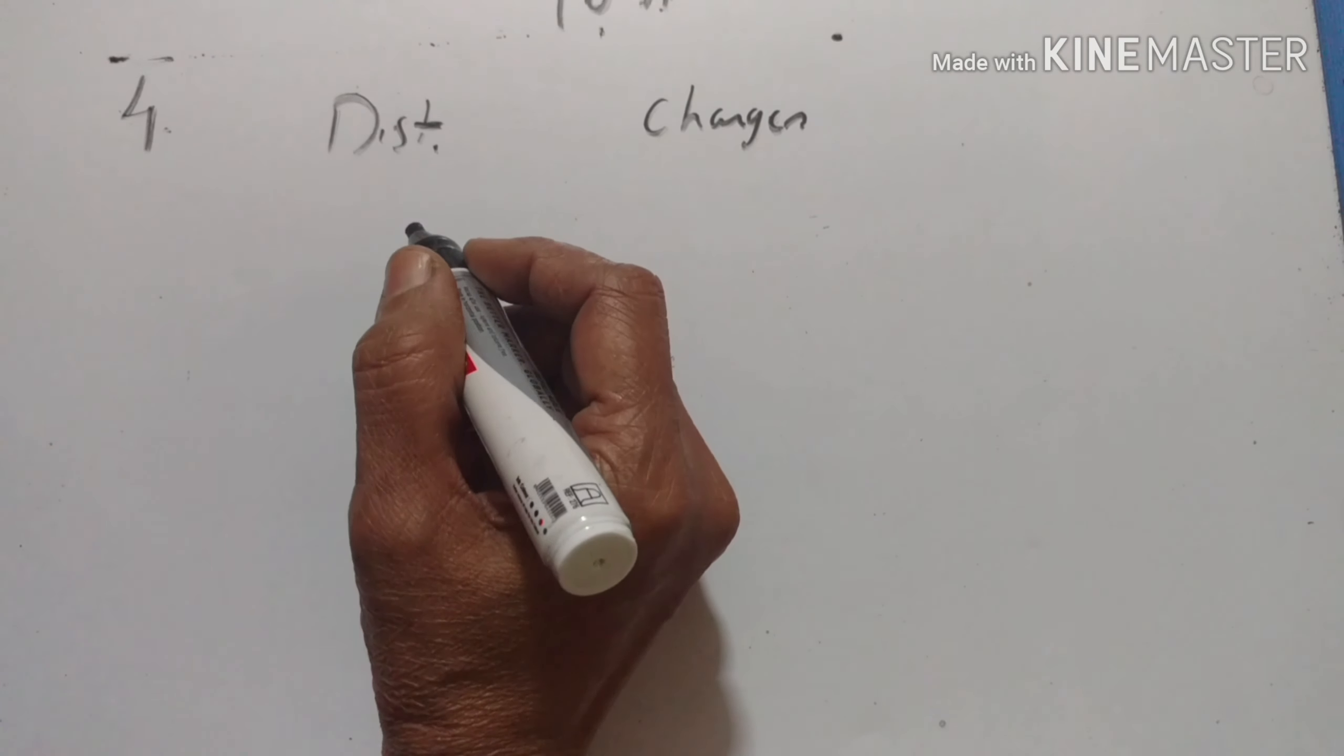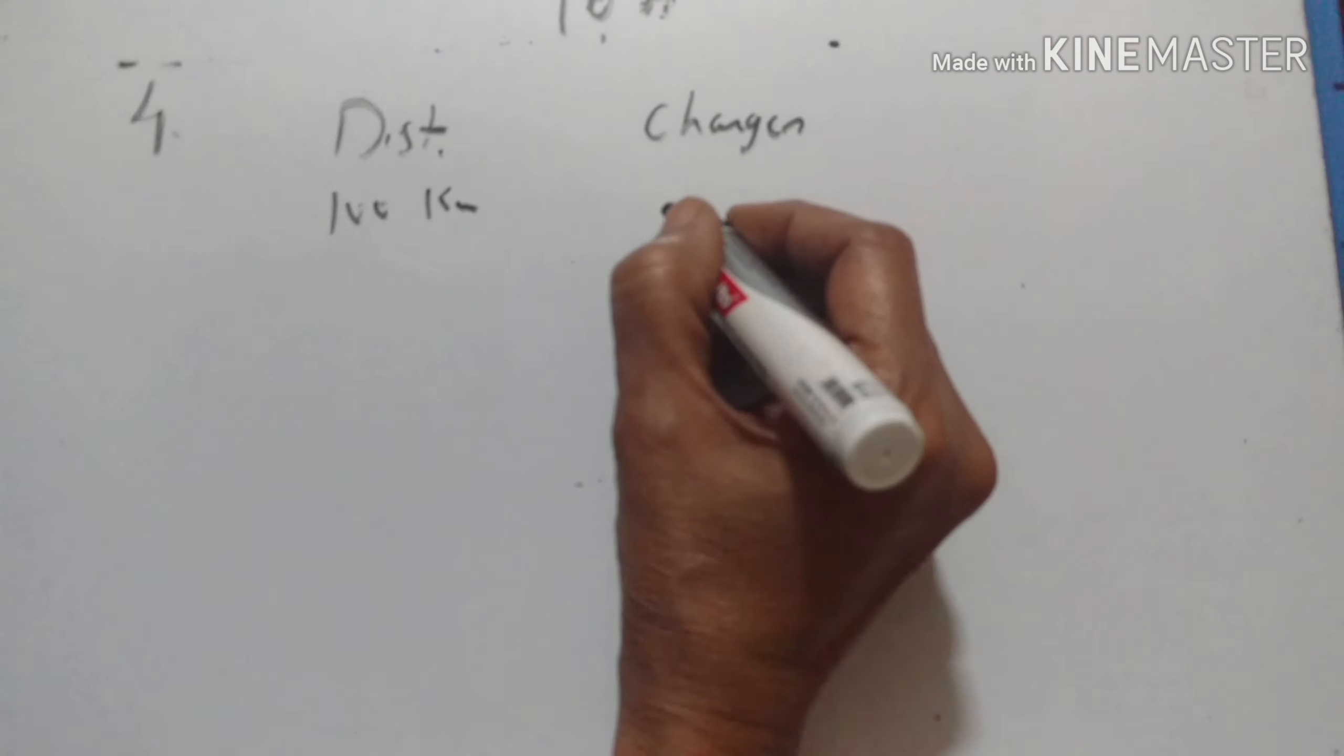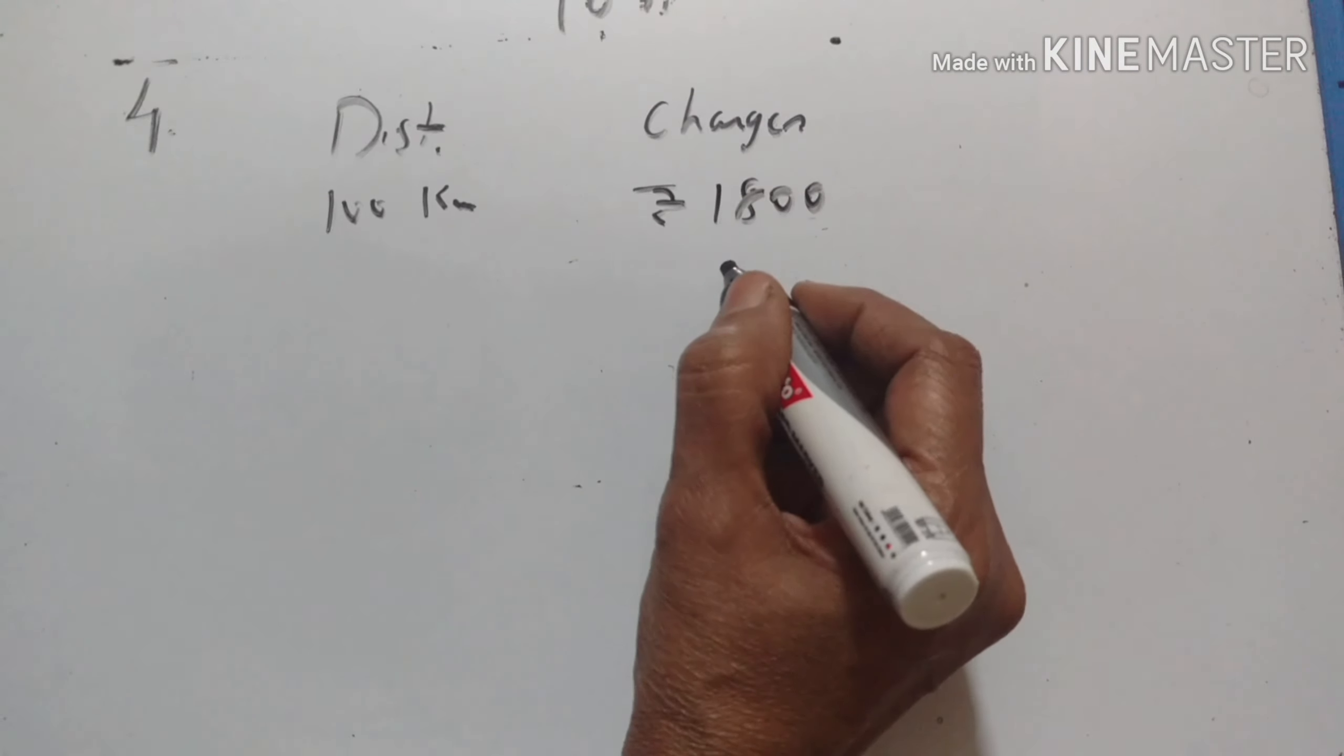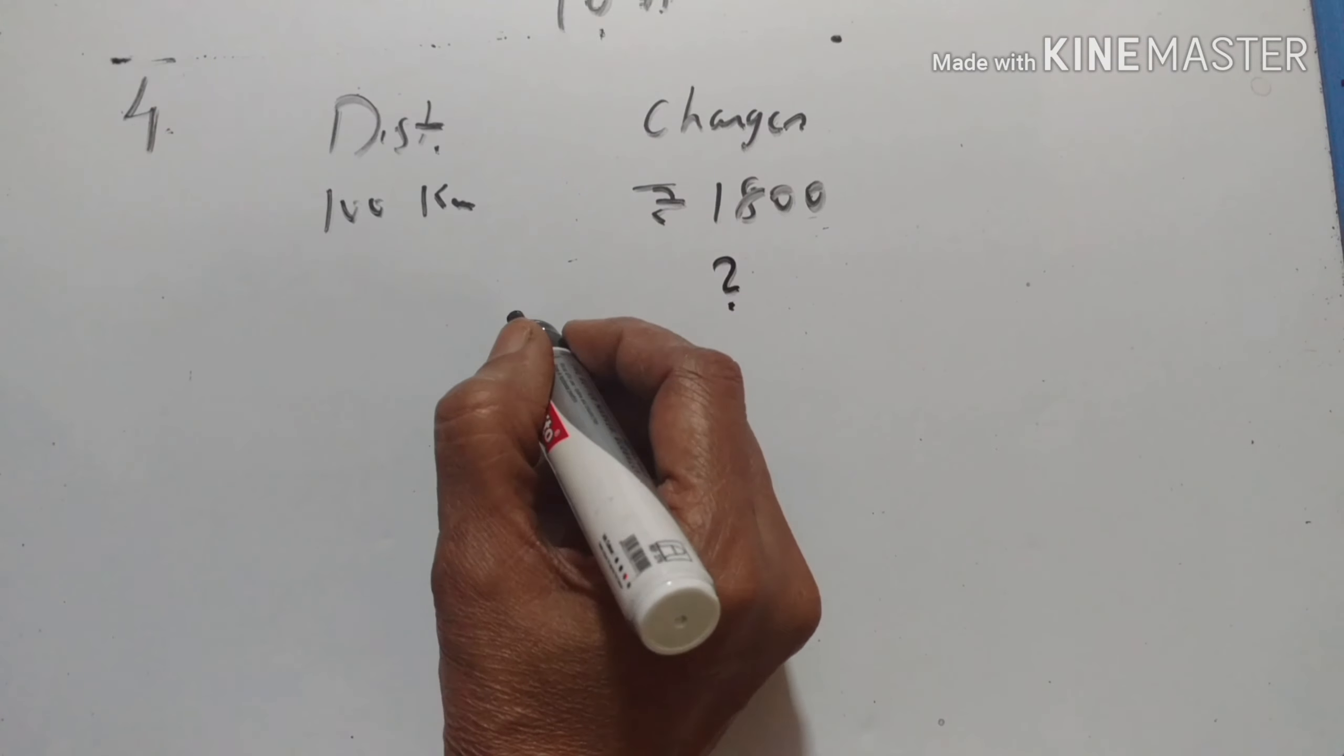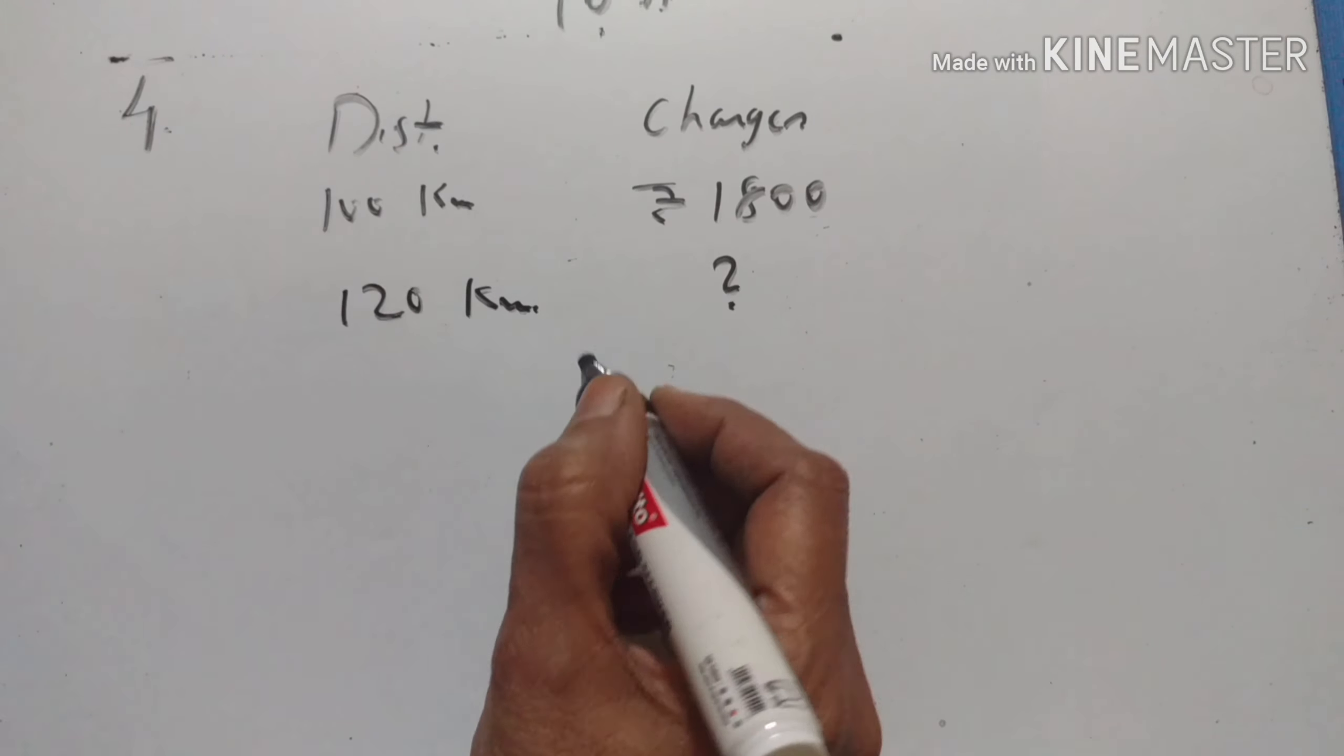So this is direct variation. For 100 km, taxi charges Rs. 1800. How much will it charge for a journey of 120 km?